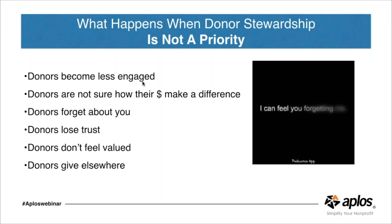What happens when donor stewardship is not a priority? Donors become less engaged, they're not sure their money is making a difference, they forget about you, they lose interest, they lose trust, they don't feel valued, and they decide to give elsewhere. Keep in mind that the average donor gives to between three and five different organizations — you're not the only one they're giving to. You want to stay on that radar without over-flooding them.